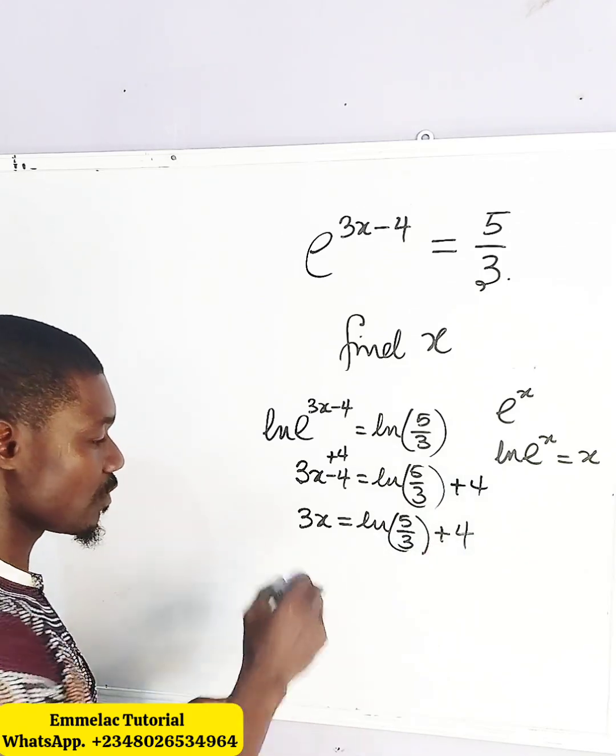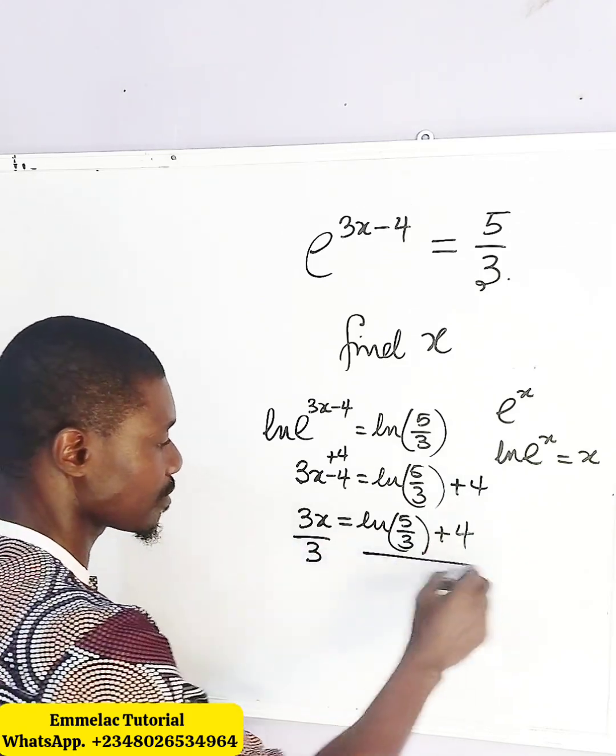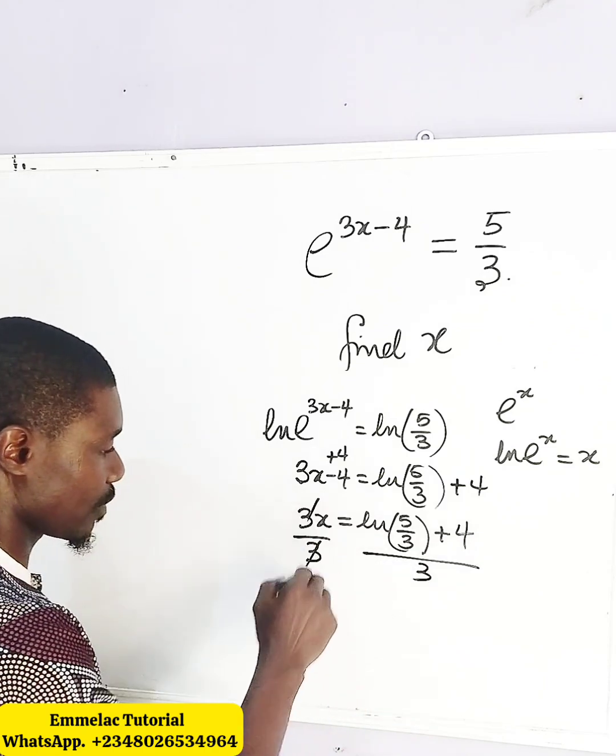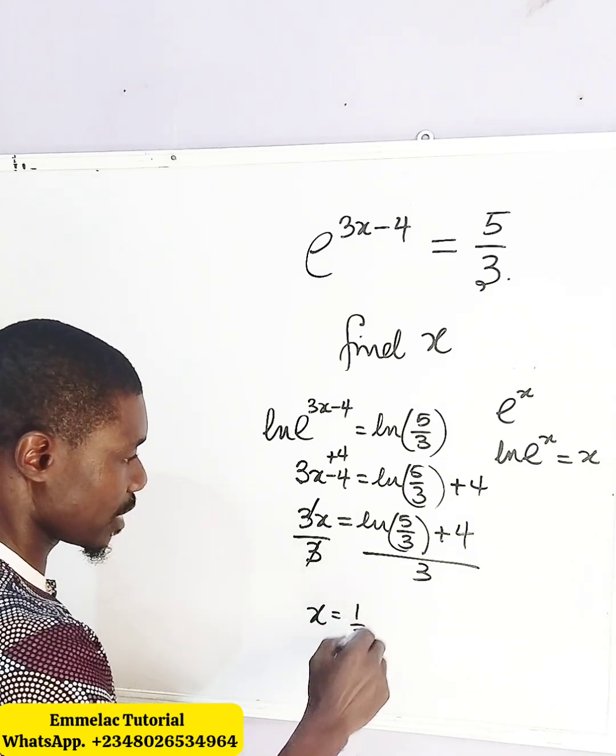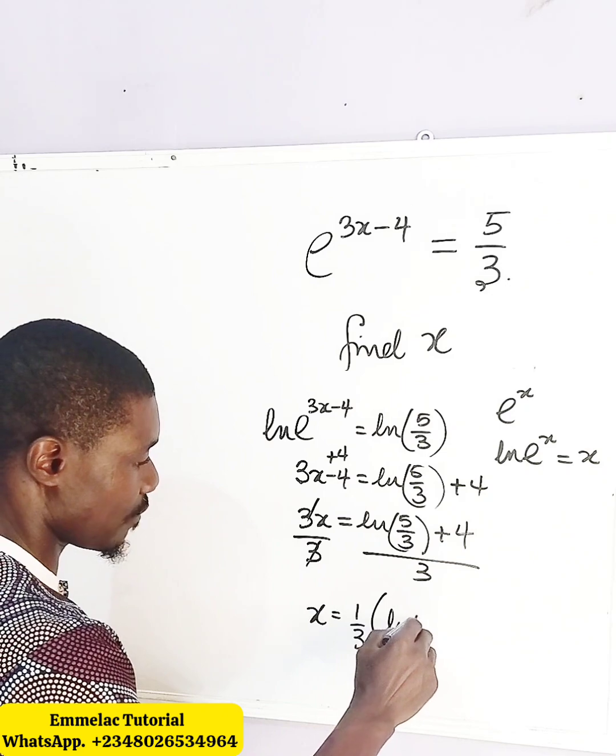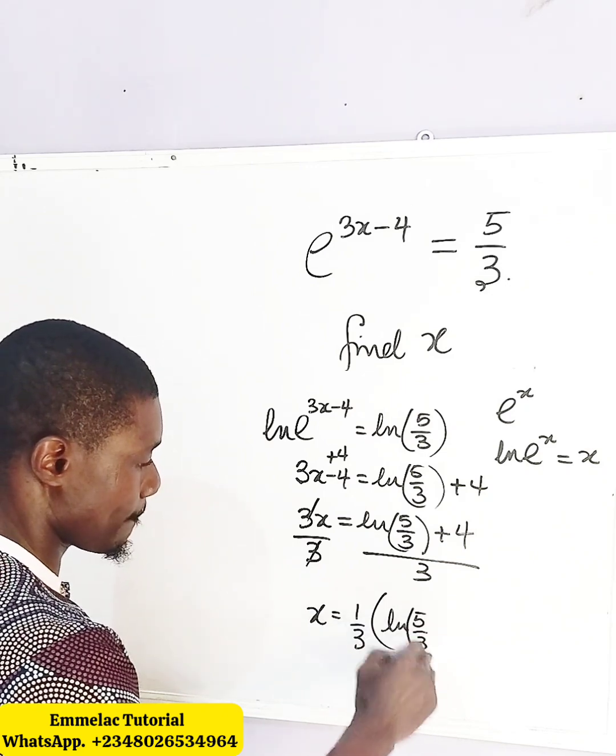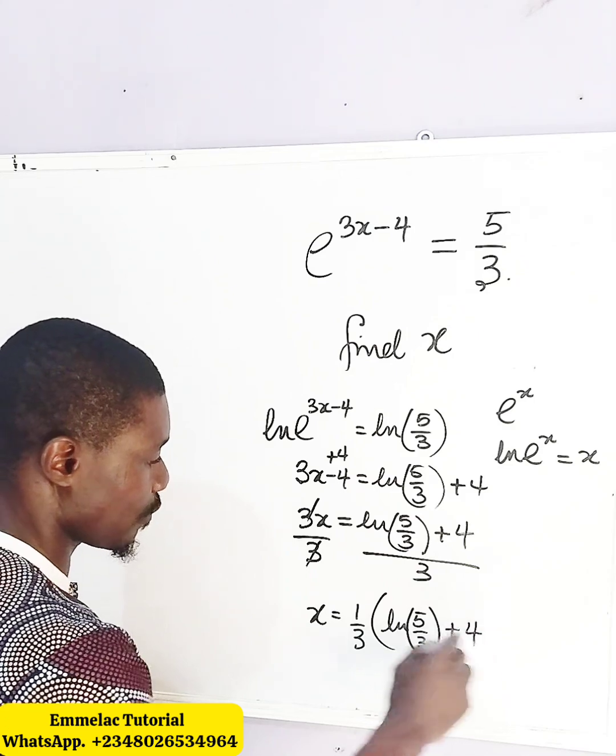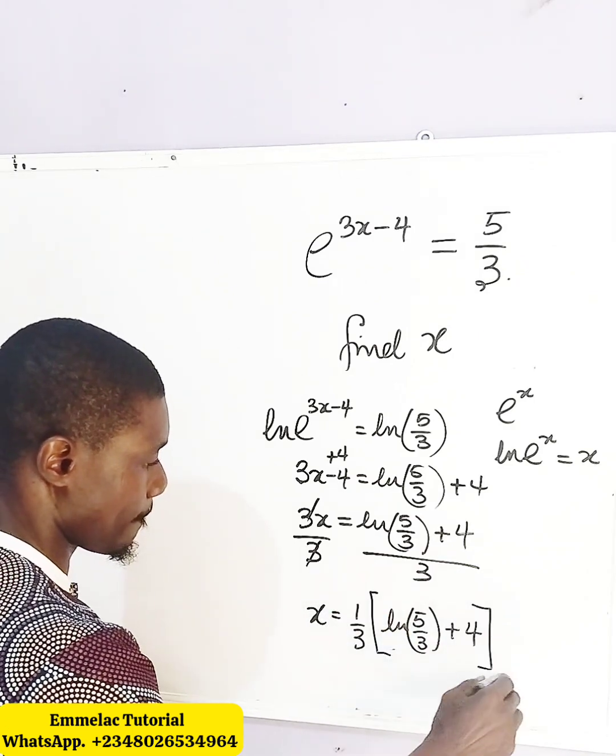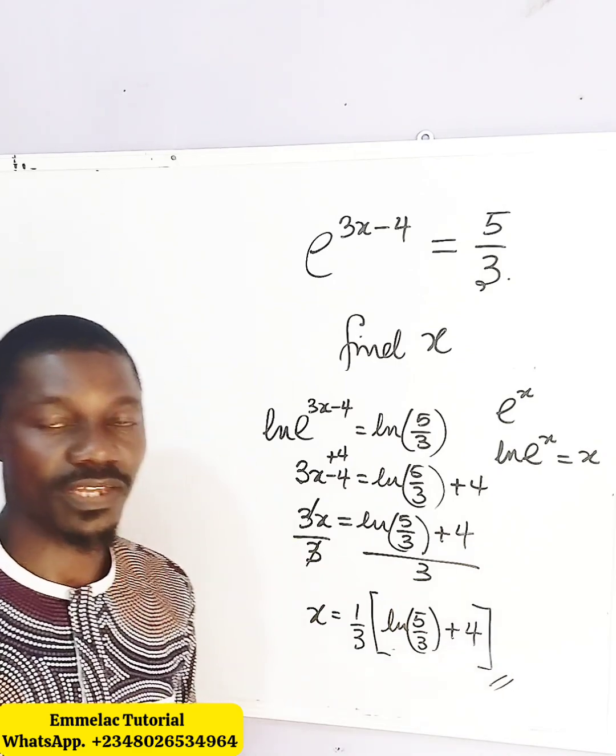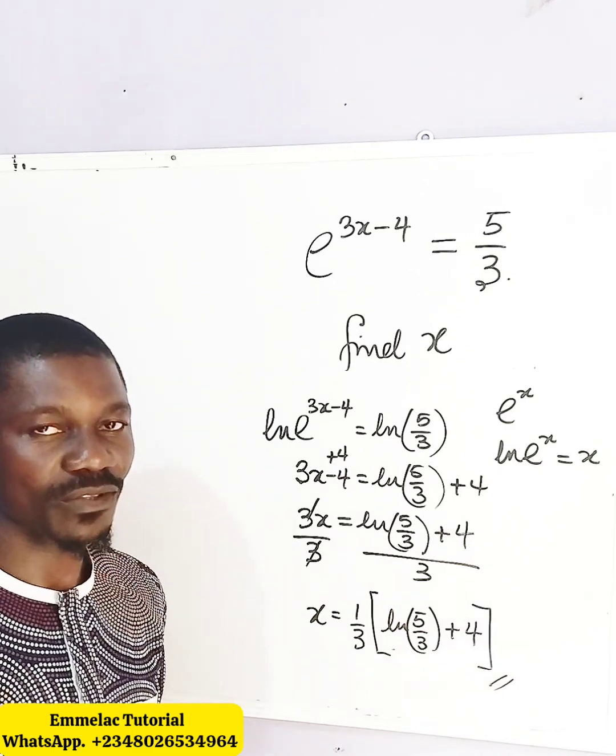What we need to do now is to divide both sides by 3. So x here will now give us 1 over 3 into ln of 5 over 3 plus 4. The final answer. Thank you and God bless you.